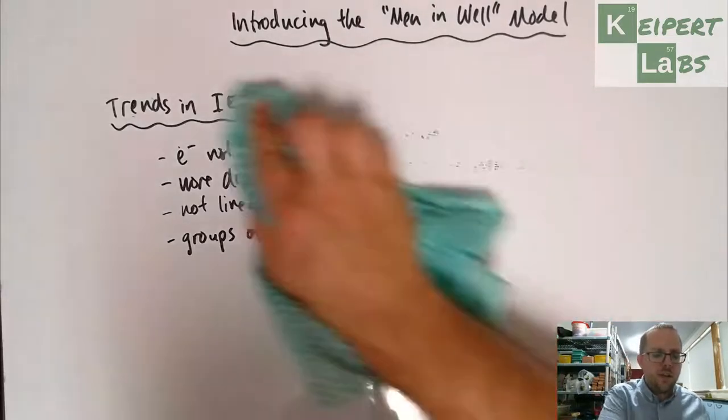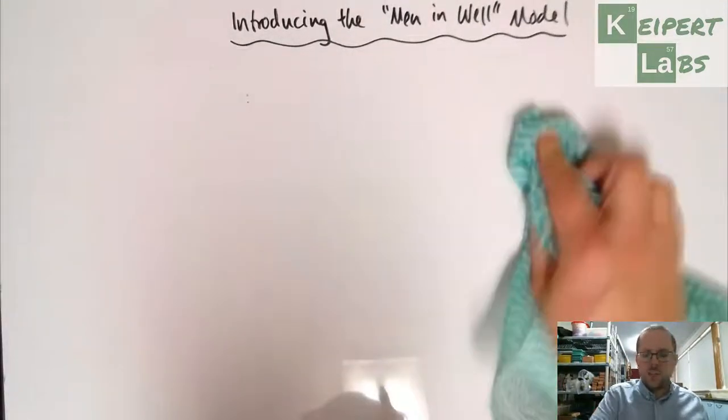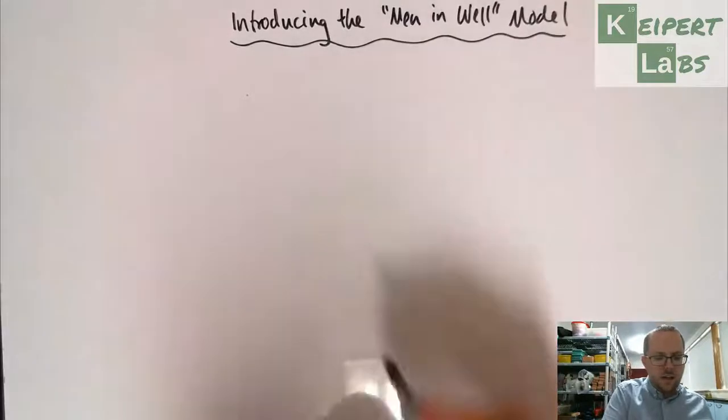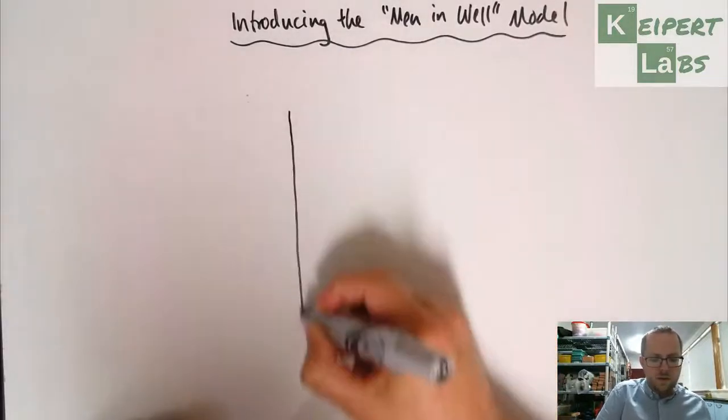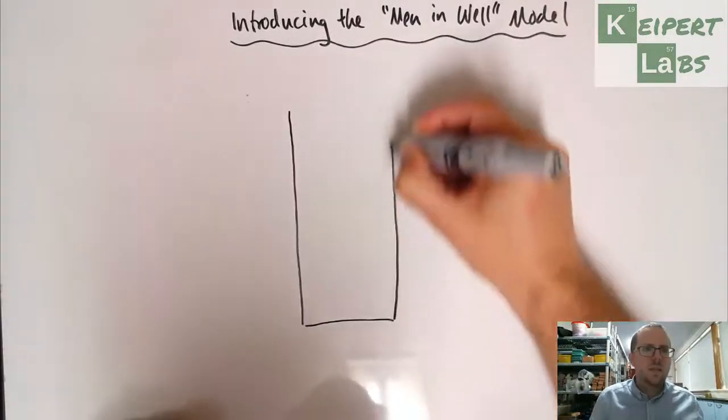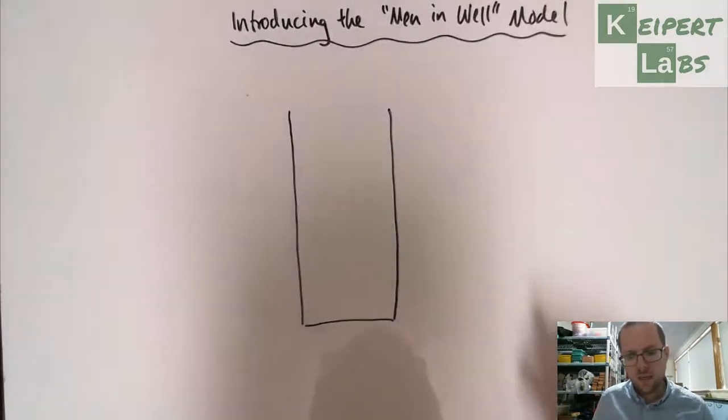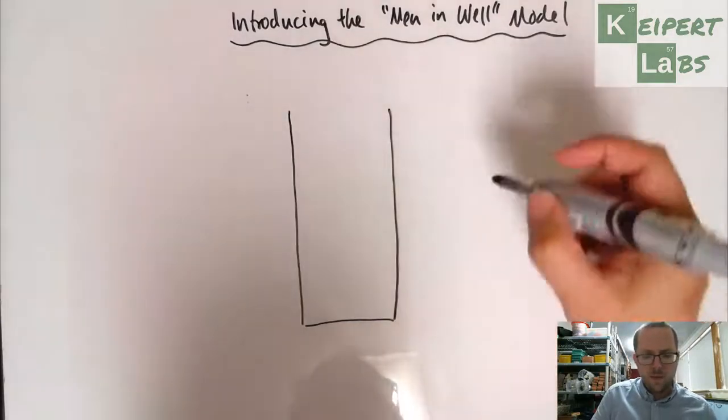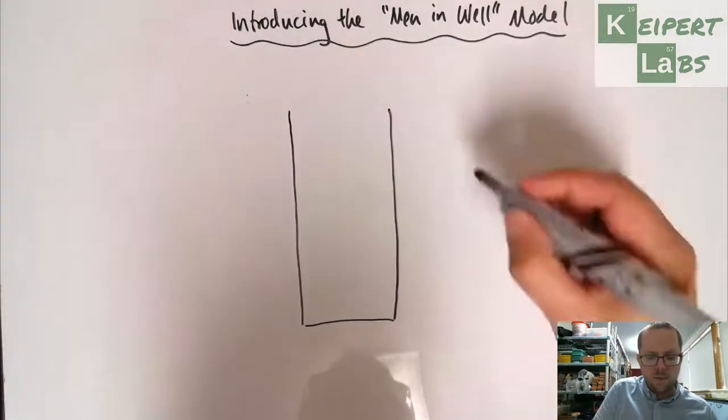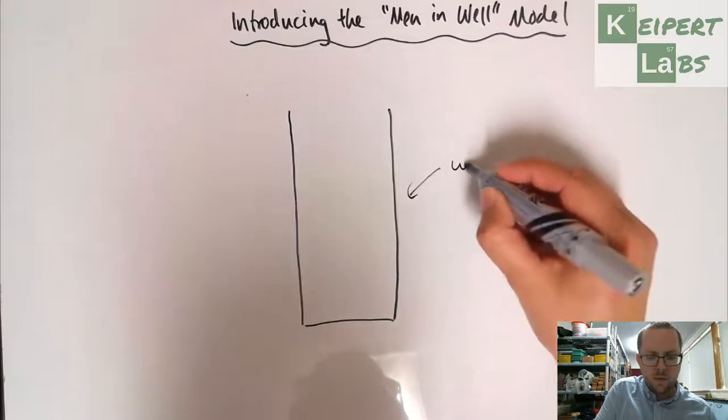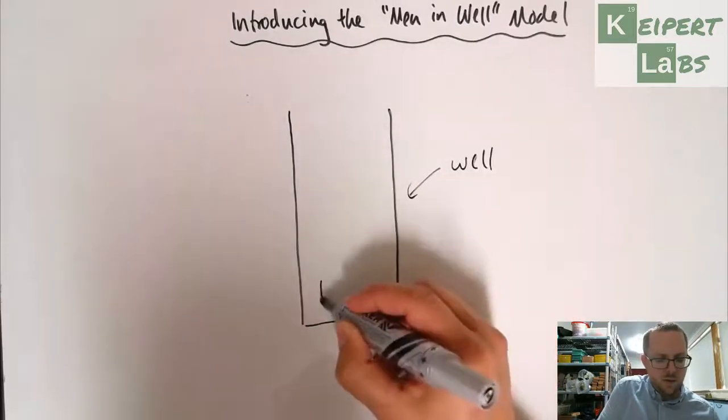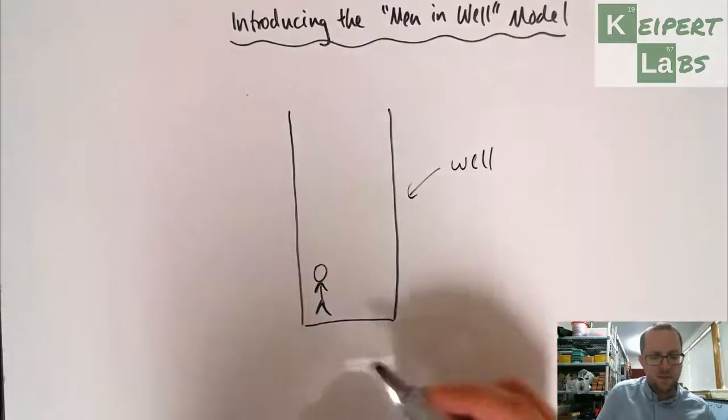The way that we're going to do that is that we are going to use an analogy imagining like there are men in a well. An actual physical well, men trapped down in the bottom of a well. So this is our well and then we've got physical men down the bottom.